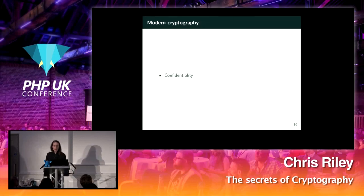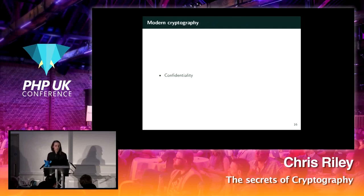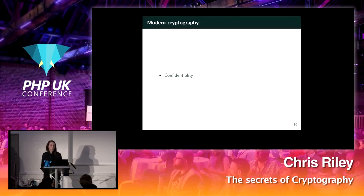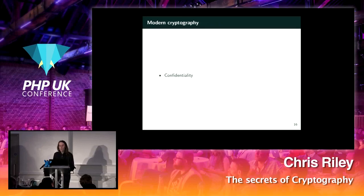Most of these algorithms are symmetric — they use the same key for both encryption and decryption. There are two main classes within that: stream ciphers, which work on continuous streams of data, and block ciphers, which break the message up into separate blocks and encrypt each separately.